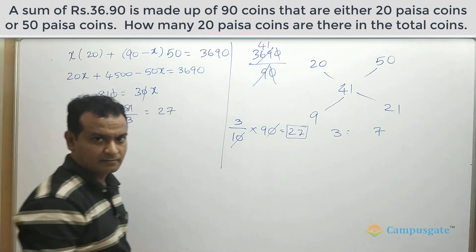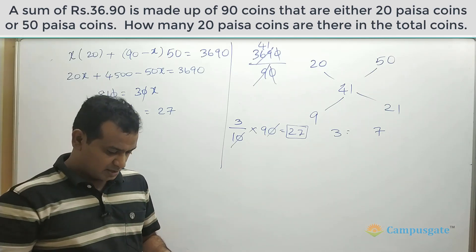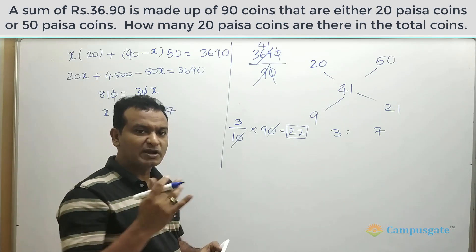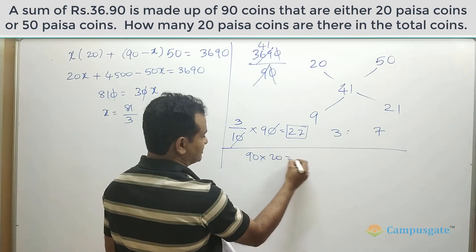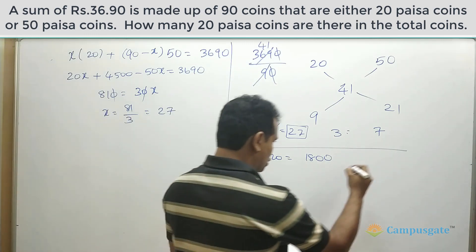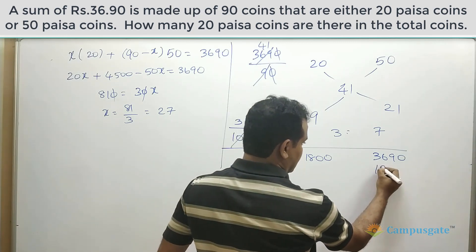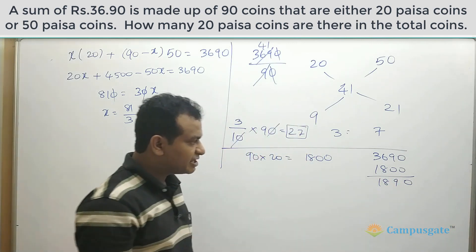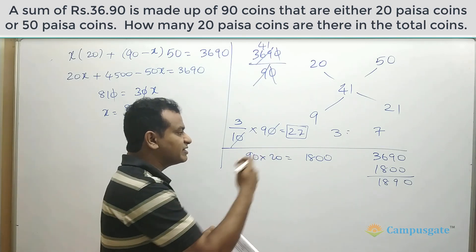This question can also be solved by a logical method. Assume all 90 coins are 20 paisa coins; the total amount would be only 1800 paisa. But the actual total is 3690 paisa, so we fell short by 1890 paisa.